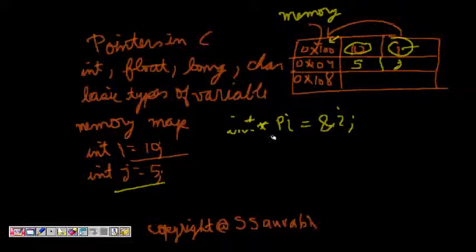I will write it as ampersand i. So this means that pi is a variable whose value is equal to 0x100, which is the memory location where i is stored.